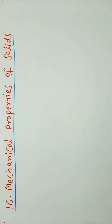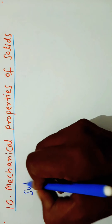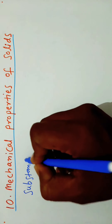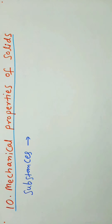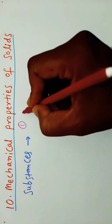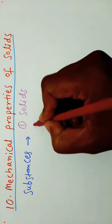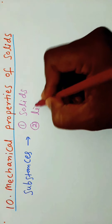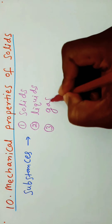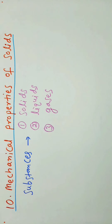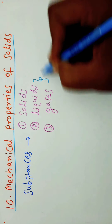We know substances are 3 types. First one is Solids. Second one is Liquids. Third one is Gases. Liquids and Gases can flow, so these are known as Fluids.